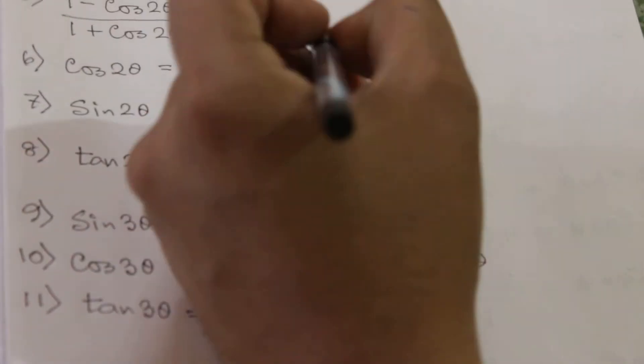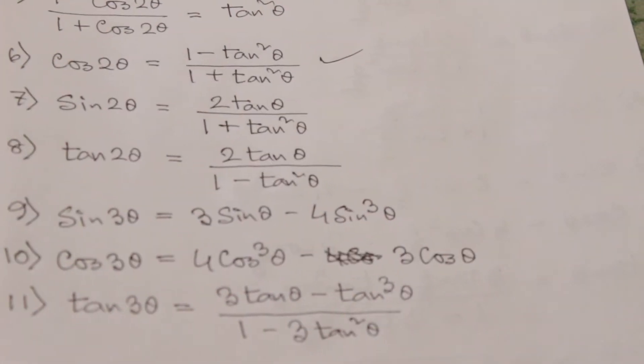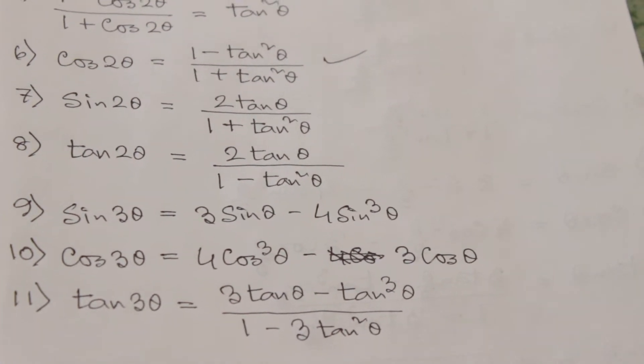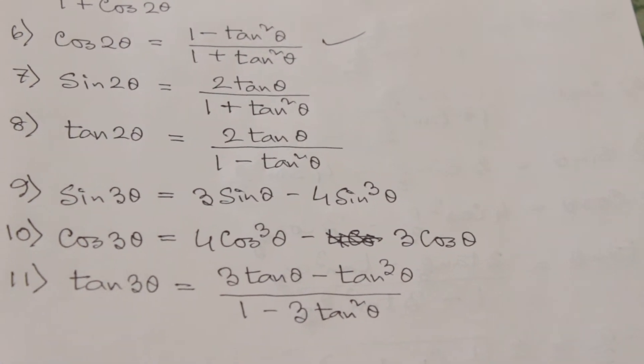Formula number 6 is cos 2θ equals (1 minus tan²θ) divided by (1 plus tan²θ). Formula of sin 2θ is 2 tan θ divided by (1 plus tan²θ).